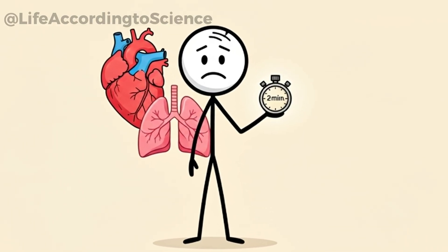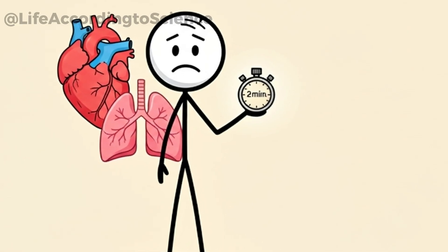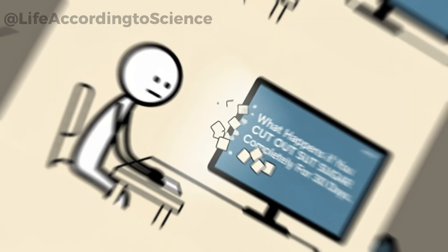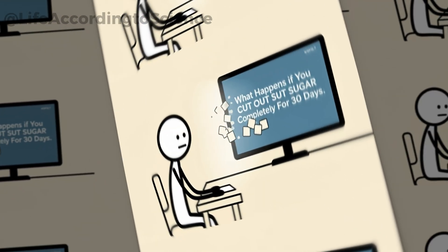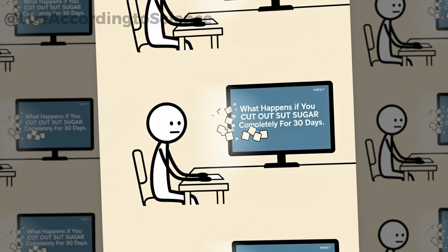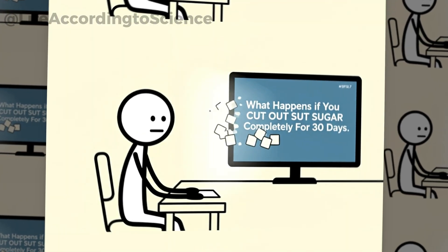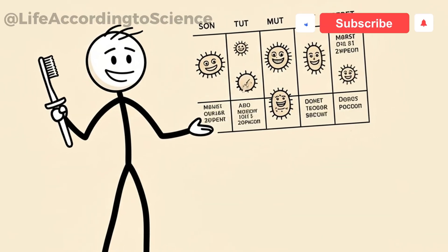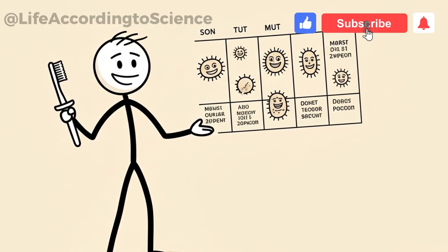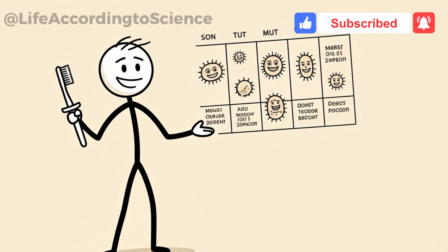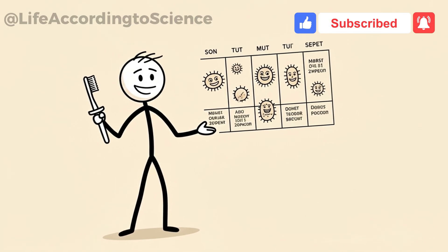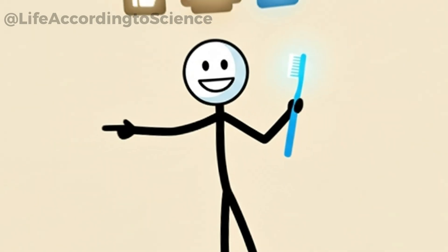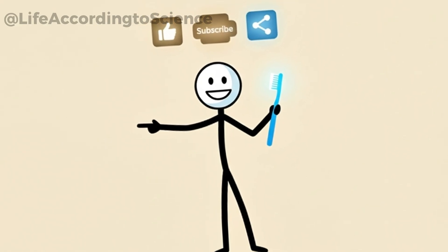And if you're fascinated by how much your daily habits impact your health, you'll love this video, what happens if you cut out sugar completely for 30 days, according to science. The results might surprise you even more than skipping brushing. So, now that you know exactly what happens when you don't brush your teeth for six months, don't forget, hit the like button, subscribe to the channel, and share this video with someone who needs a reminder to pick up that toothbrush.